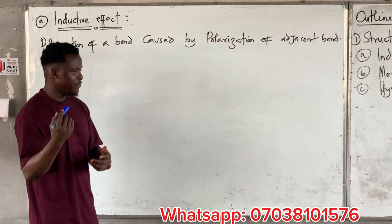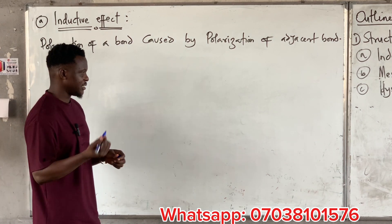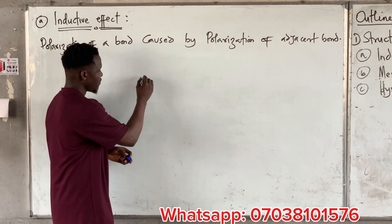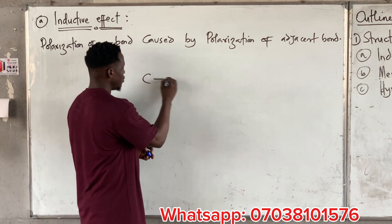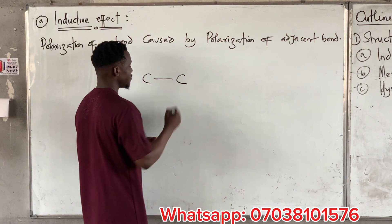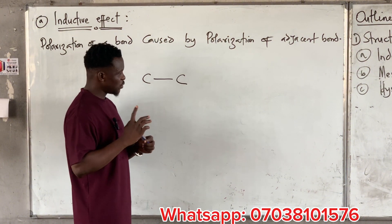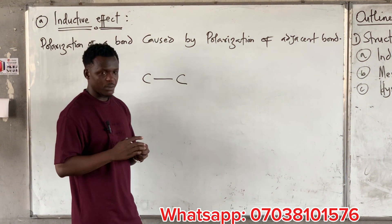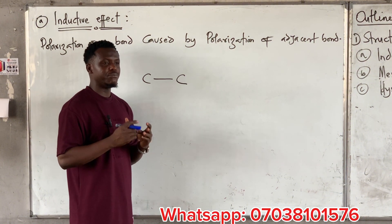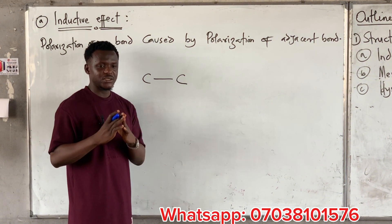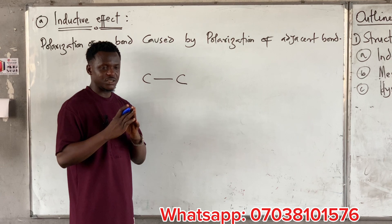Now, what is polarization? Let me give an example. Let's say I have a bond. There are two things that can happen to a bond: it's either a bond is polarized, or a bond is broken.